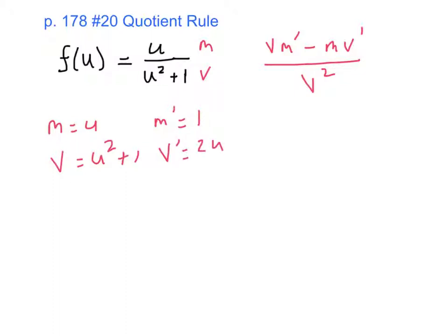And now that we know those values, we can write the expression for the derivative using the quotient rule. So here we go. f prime of u is v times m prime, which is u squared plus 1 times 1. So that's just u squared plus 1 minus m times v prime, which is just u times 2u.